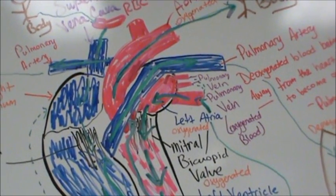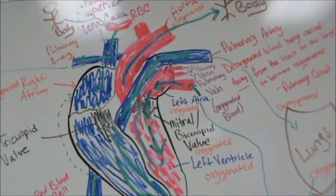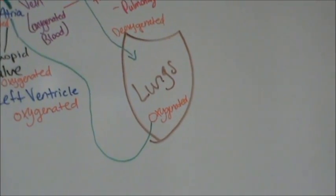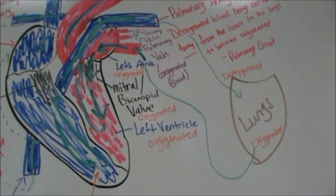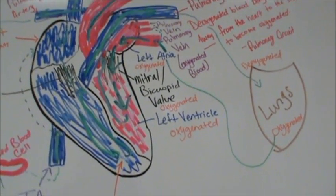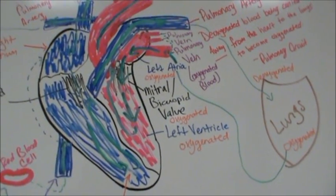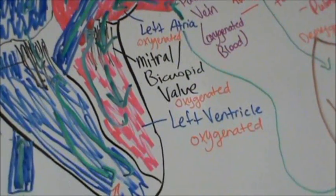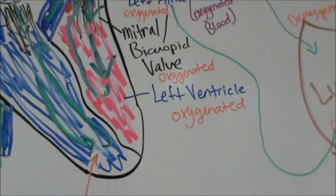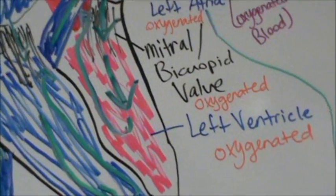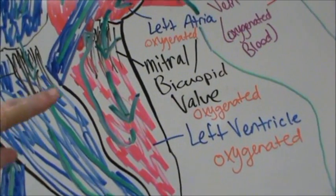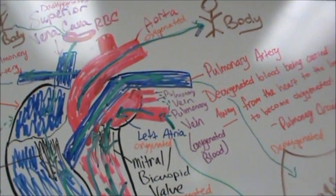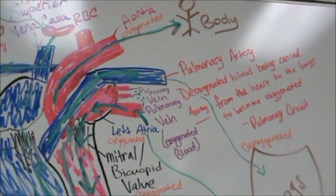The pulmonary artery branches off two different ways and goes out to the lungs — the lungs are on both sides. The blood is deoxygenated when it arrives, and once it gets to the lungs it becomes oxygenated. It's going to come all the way back up and go through the pulmonary vein — any of those three. Then it's going to go into the left atrium, through the mitral or bicuspid valve, and into the left ventricle. From there it's going to be squeezed and ejected into the aorta. All this time it's oxygenated and it's going to go into the body.